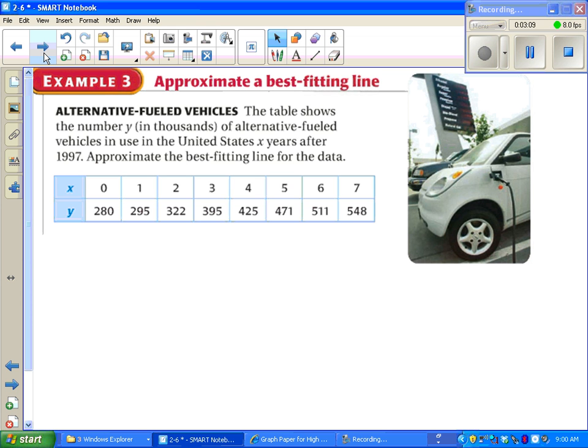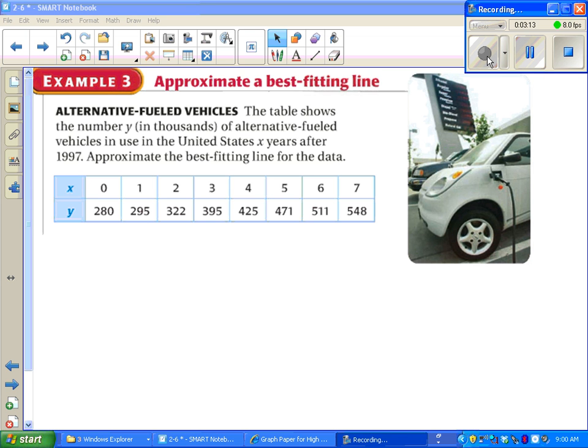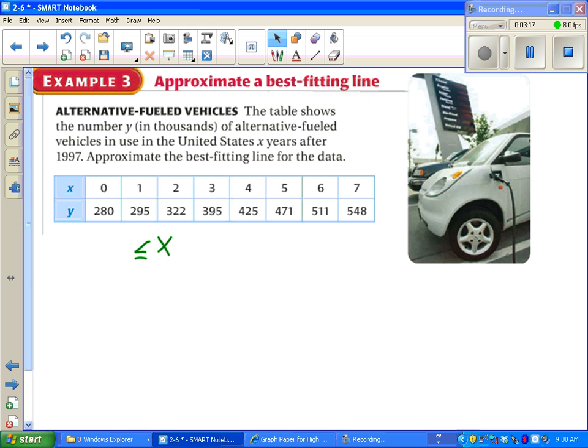Go ahead and pause the video and read. So we're going to plot these points. It looks like our x values should probably go from 0 to 7, at least. Our y values need to go from 250. The lowest value is 250. Our biggest value is 548, so make something to 550.